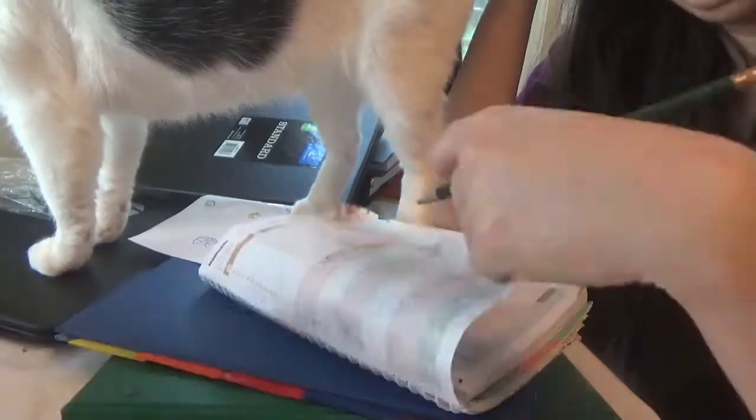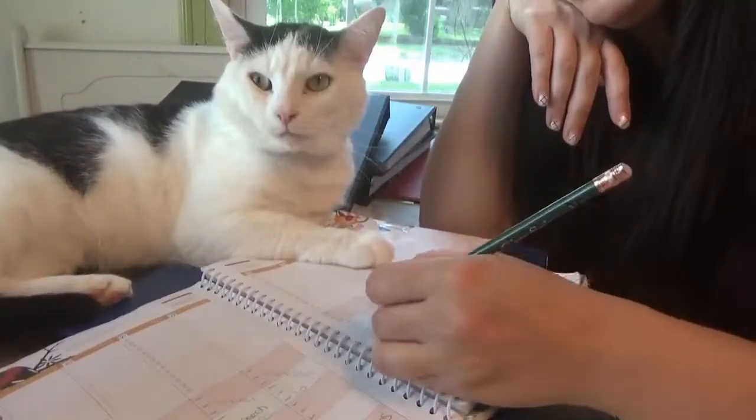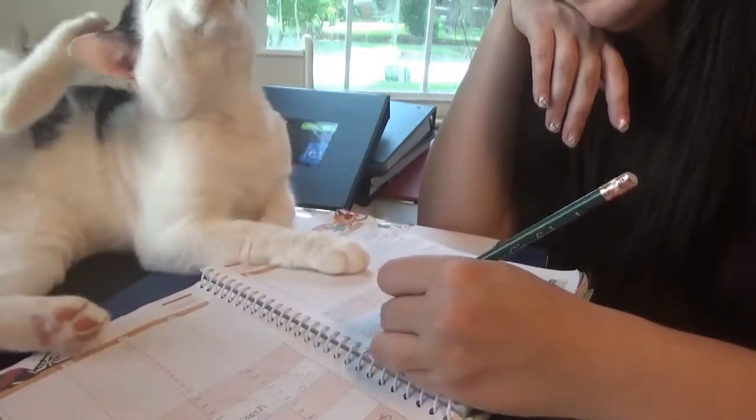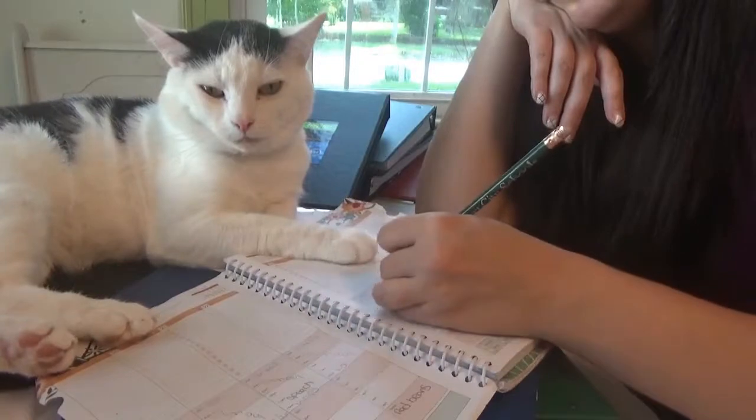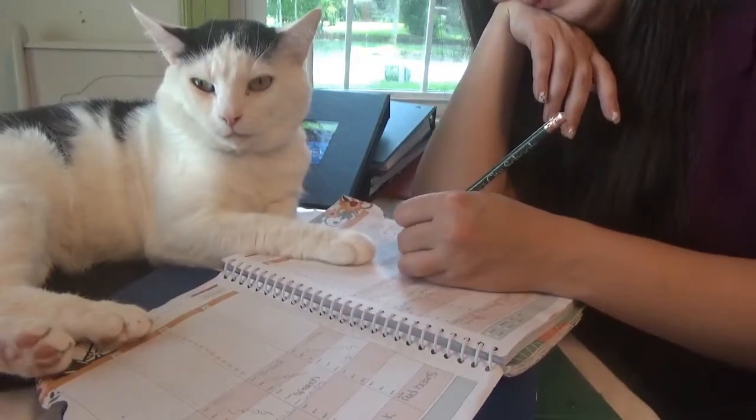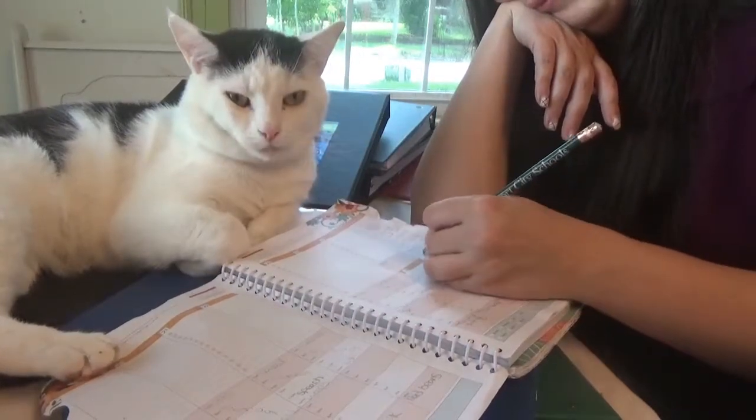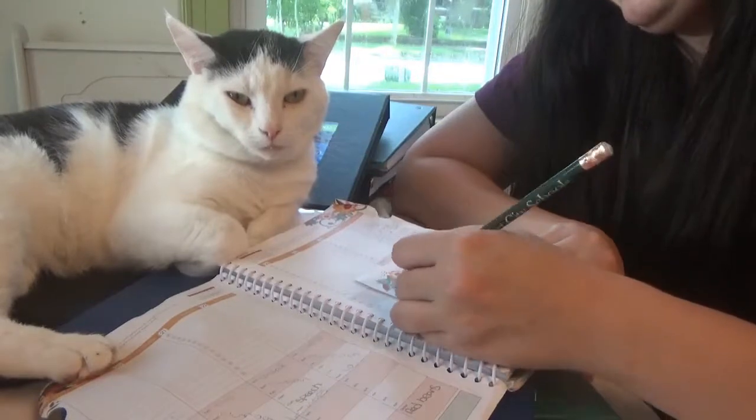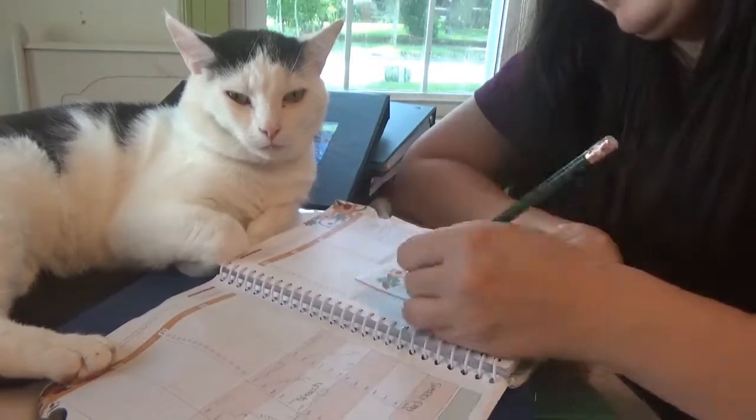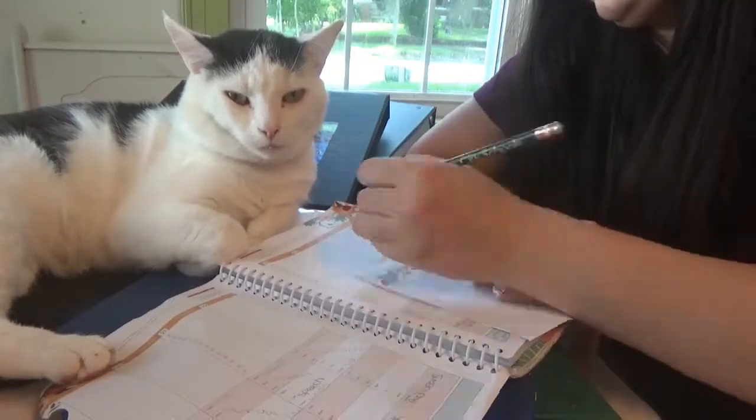So then I can go to my shopping list. If you haven't seen the Well Planned Day, each month comes with this page of cute little shopping lists that you can just tear out. I really like it, I think it's adorable, and I can go through and make the grocery list that we'll need.